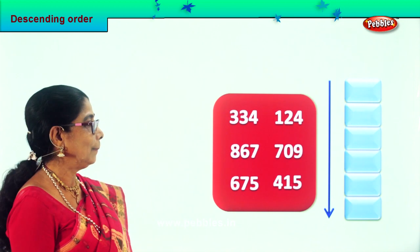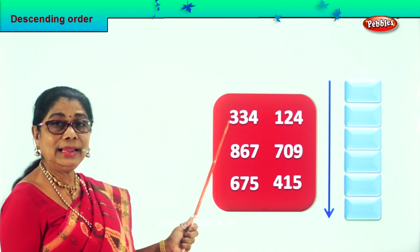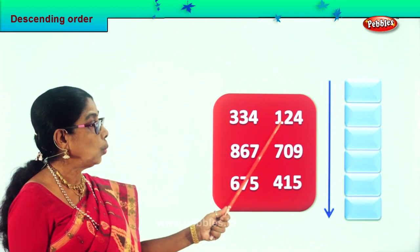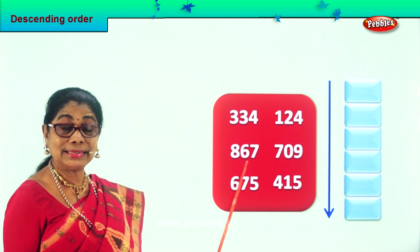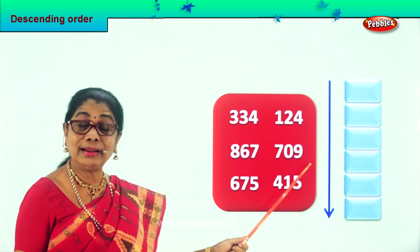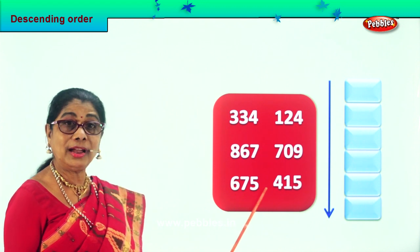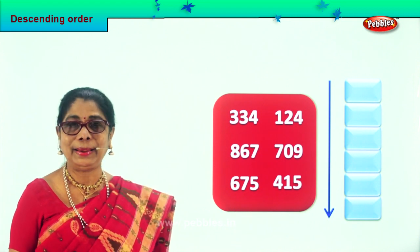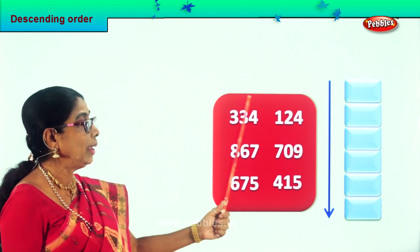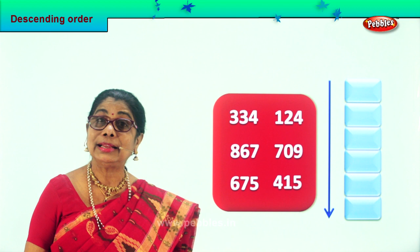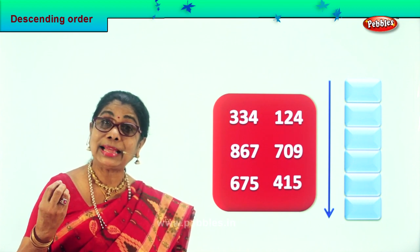Here we are. First we have to say aloud the numbers. Three hundred thirty-four, one hundred and twenty-four, eight hundred sixty-seven, seven hundred nine, six hundred seventy-five and four hundred fifteen. So now we are going to identify the biggest one. Let's look at the hundredth place.